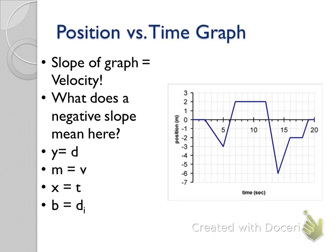If you have a negative slope, that means you're moving in the backward direction. From fourteen to sixteen seconds, we're moving forward because our slope is positive — moving back toward our starting point. From sixteen to eighteen seconds, we're standing still. From eighteen to nineteen seconds, we made it back to our starting point and then stood still for one second. You're going to have to calculate things from this graph and also describe the motion you see.